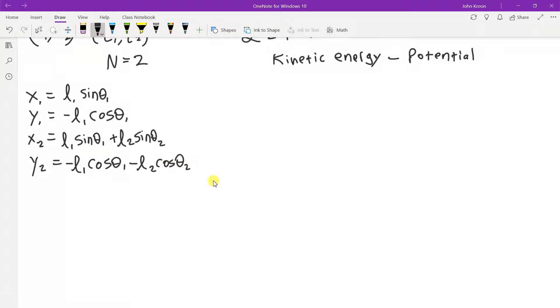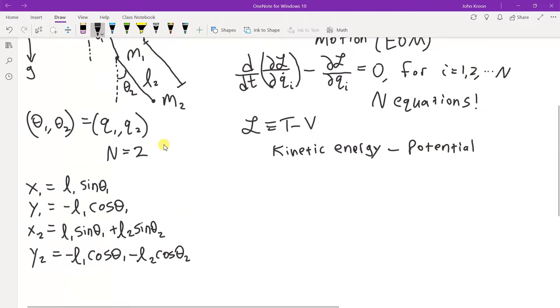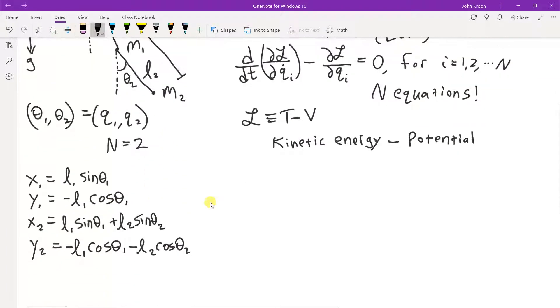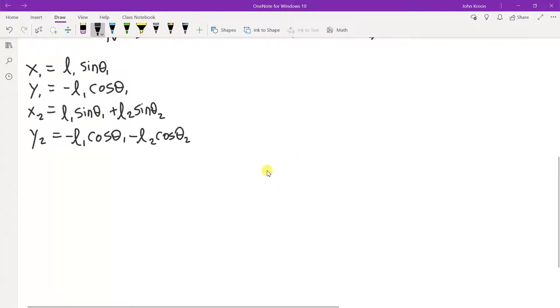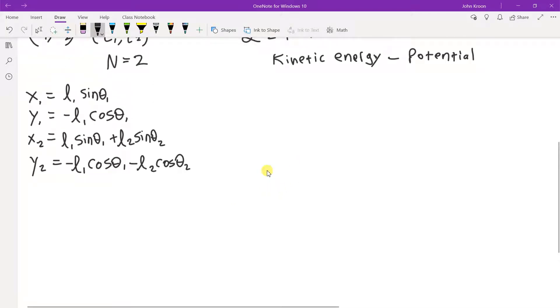All right, so this is the starting point of everything and we want to now write down the potential energy and the kinetic energy of the system. m1 g y1 plus m2 g y2 and we already have our y's, they're here and here, so we just plug those in.